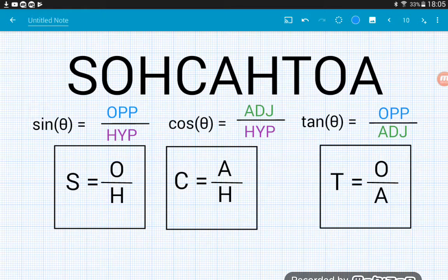CAH, C-A-H, cos is the C bit, and then we've got the adjacent and the hypotenuse. And then TOA at the end, TOA, T for tan, O for opposite, A for the adjacent.